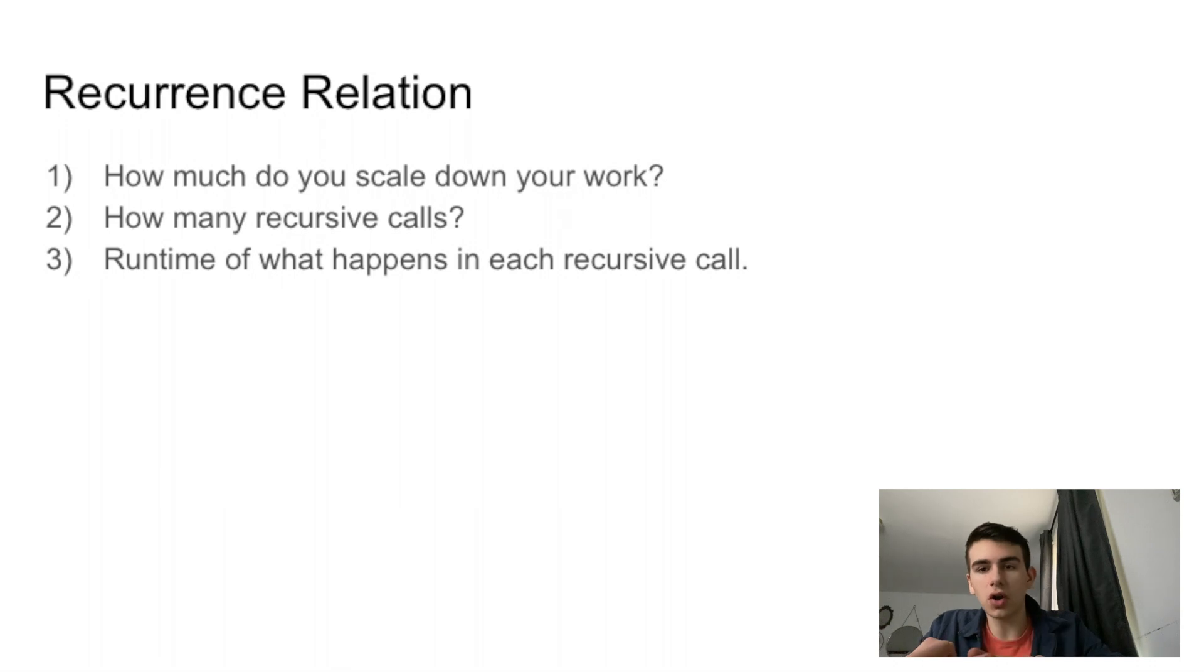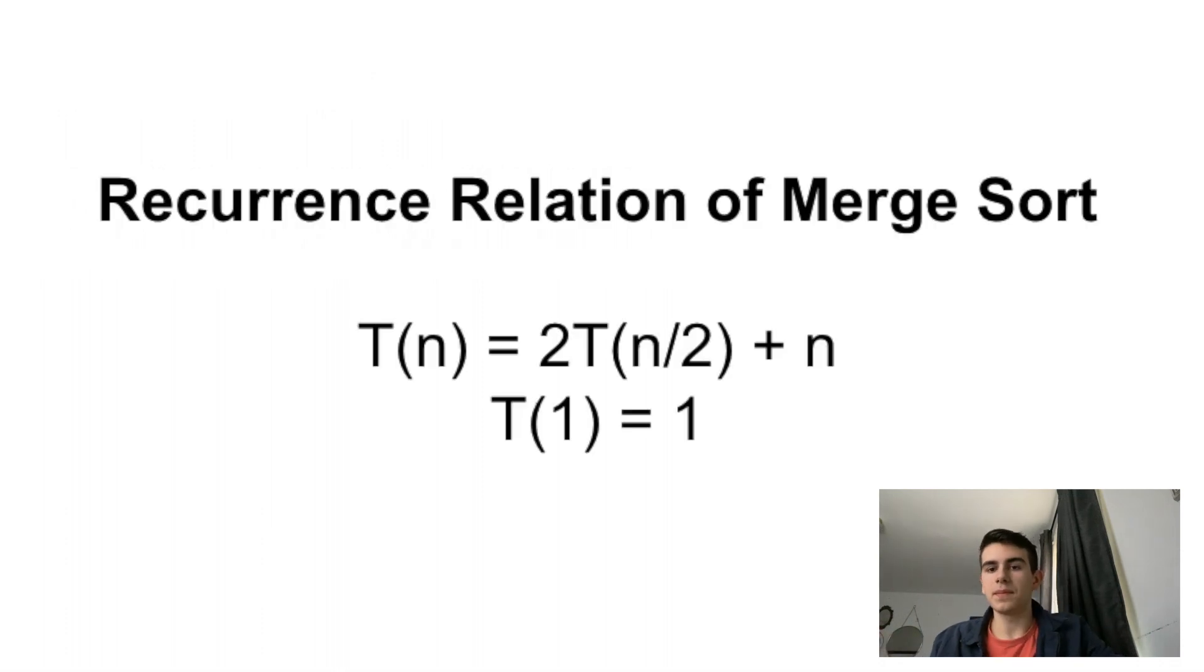Two, how many recursive calls are you making per cell? Like, am I calling three or four, five? Like, again, it has to be a number. And then the third thing is the runtime of whatever's happening in each recursive call. And that's important, obviously, because it's just another runtime to consider.